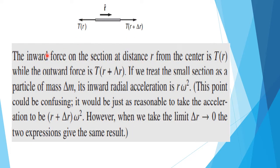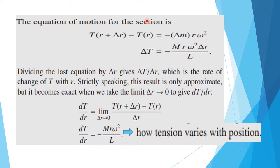The inward force on the section at distance r from the center is T(r), while the outward force is T(r + delta r). Treating the small section as a particle of mass delta m, the radial acceleration of this mass delta m — which is the mass of a section of length delta r — gives the equation of motion. The net force is T(r + delta r) minus T(r), which equals minus delta m times its radial acceleration r·omega squared.